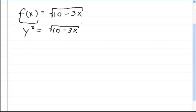We're going to square the y, and we're going to square this in order to get rid of the square root, which gives you y squared is equal to 10 minus 3x.